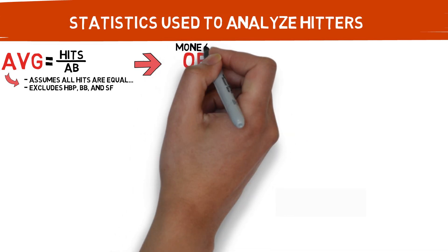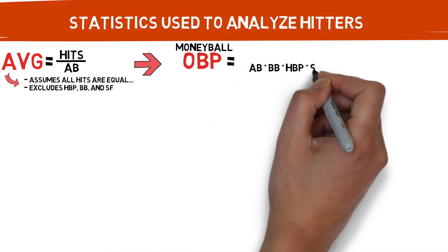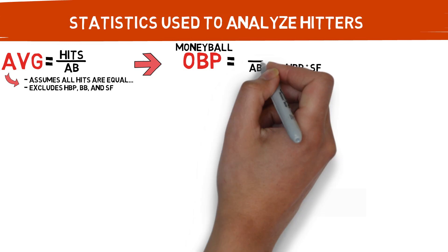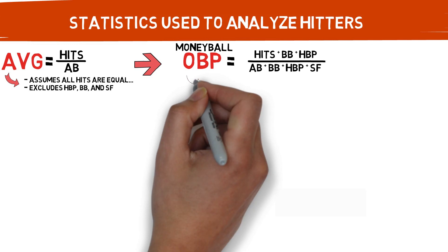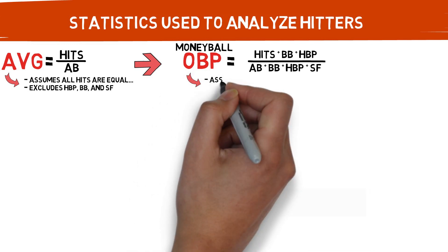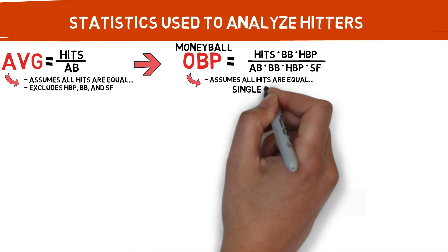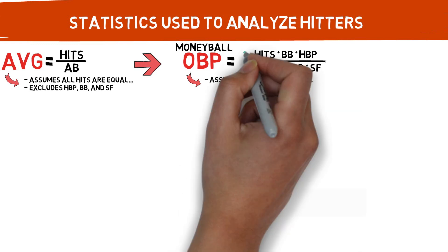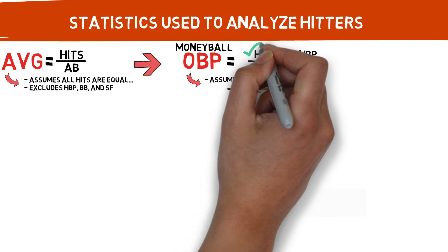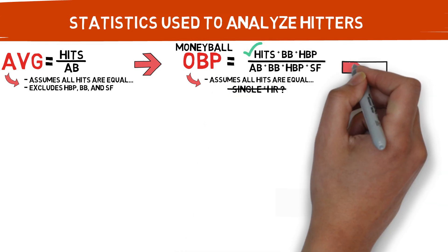That leads us to OBP, or on-base percentage. This stat took off during the Moneyball era as the new best way to evaluate hitters. It got rid of one of the flaws that batting average held — that it didn't account for hit-by-pitch, walks, or sacrifice flies. However, it still graded hits on an even scale. A single isn't the same value as a home run, or even a double or a triple. But we're definitely moving in the right direction here.